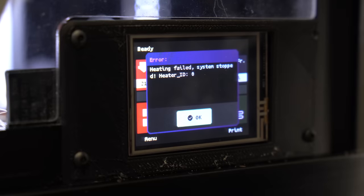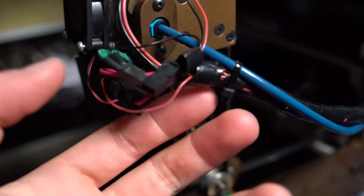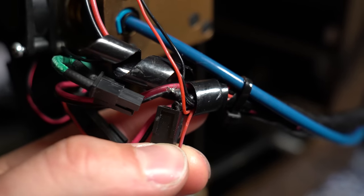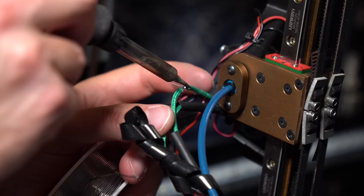Well, good news, the new thermistor came in. But after replacing it, yep, still having issues. So it took a little more debugging to discover this. Bad crimps. Not fun. Rather than wait for more crimps to come in, I'm just going to solder this, and we're back in business.